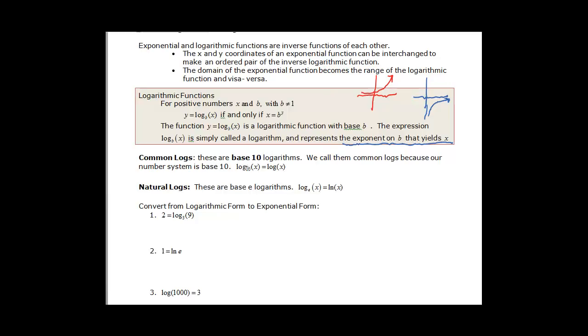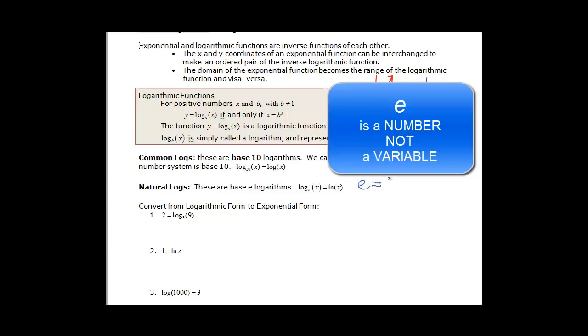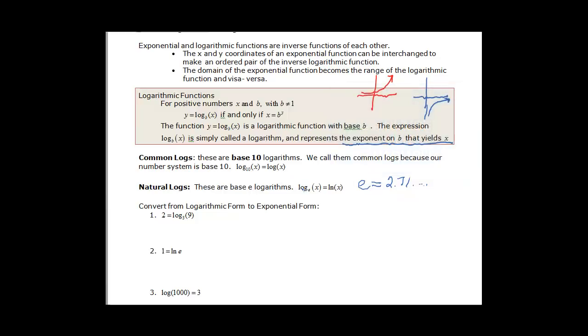So we call it a common log. And when you see log base 10, you don't usually see that. You just see log 10 and you know that it's assumed that it's base 10. Then we have natural logs, and these are base e. And e is a natural number that happens in science and in nature. It has a value, and I don't know how to tell you to emphasize it enough, but to tell you that e is a number. It's 2.71 and so on. It's an irrational number. It goes on and on and on forever. But it is a number. It's not a variable. So we don't write log base e of x. Because it's this naturally occurring number, we can use ln x.